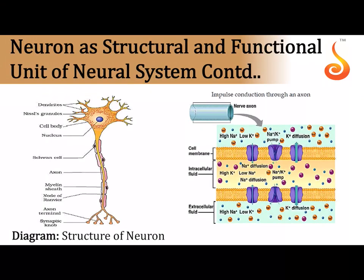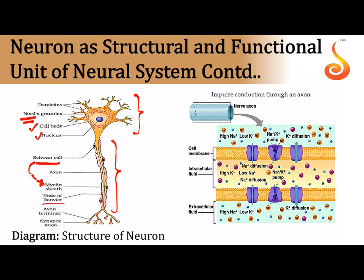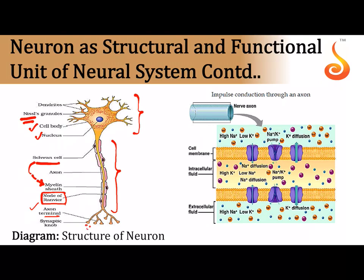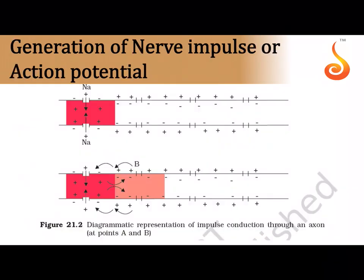The multipolar neuron has a cell body (cyton) containing a nucleus and Nissl granules (ribosome-rich regions for protein synthesis). Nissl granules extend into the dendrites. The axon conducts impulses and is wrapped by Schwann cells forming the lipid-rich myelin sheath. Regions where the myelin sheath is absent are called nodes of Ranvier. Axon terminals branch into fine endings with bulb-like structures that release neurotransmitters to signal the next neuron.